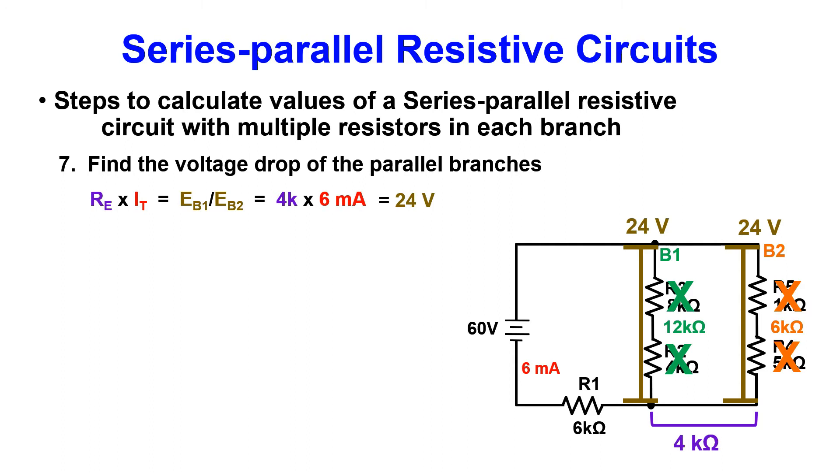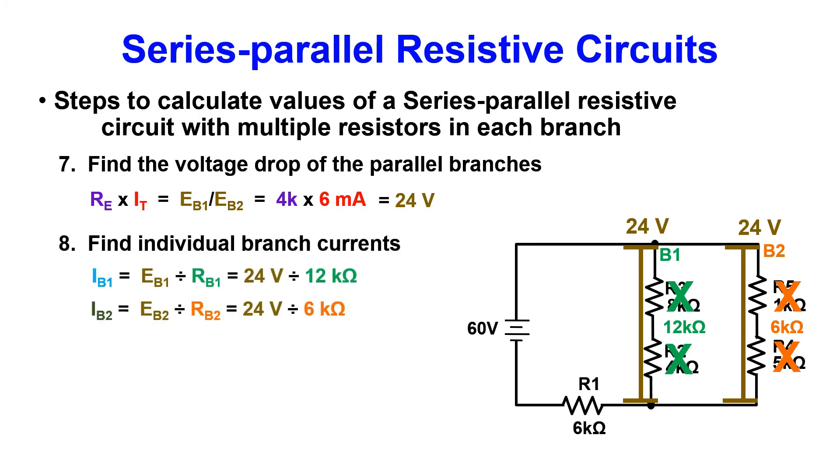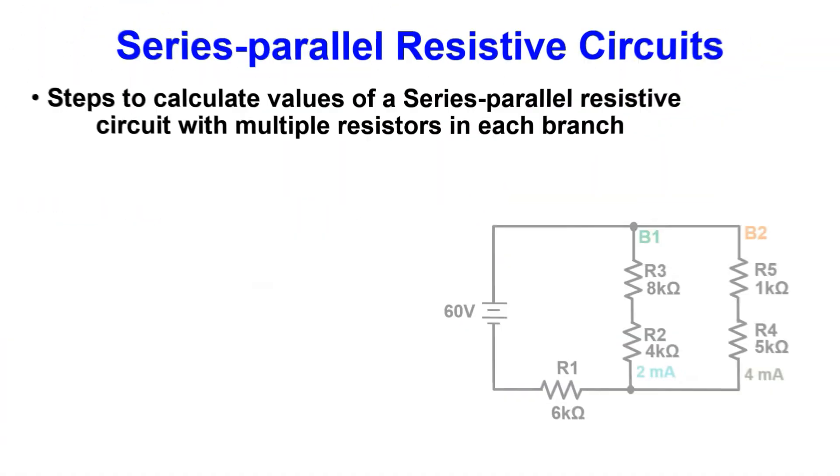Now to use Ohm's law to calculate each individual branch current. The branch voltage divided by branch resistance will give the branch current. Use this branch current multiplied by the individual resistances in each branch to get their respective voltage drops.